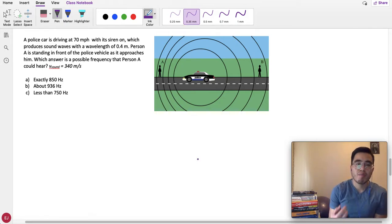Now, person A is standing in front of the police vehicle, so that means the police vehicle is driving towards him. So, the wavelength will be shorter for him. If the wavelength is shorter, that means the frequency will be higher. They're inversely proportional. I'm going to explain that later. And more than numerical, although we have to do some math, this is more conceptual. This problem is testing if we know the effect of the Doppler effect.